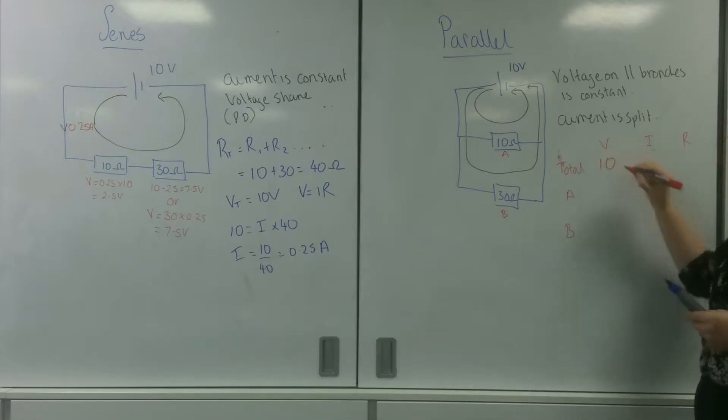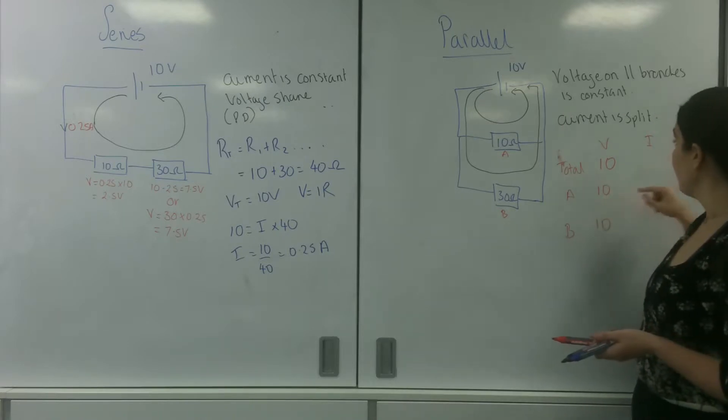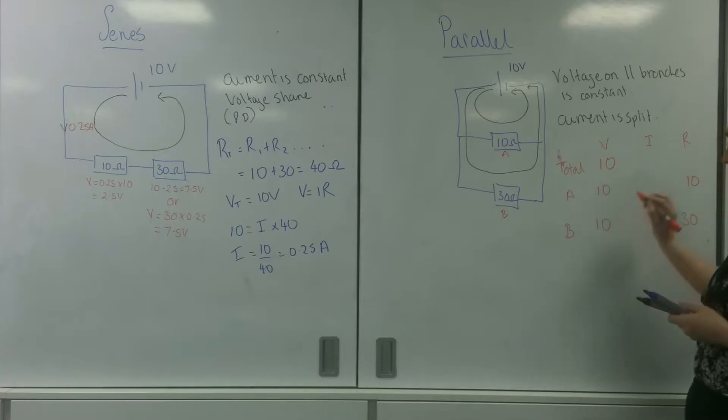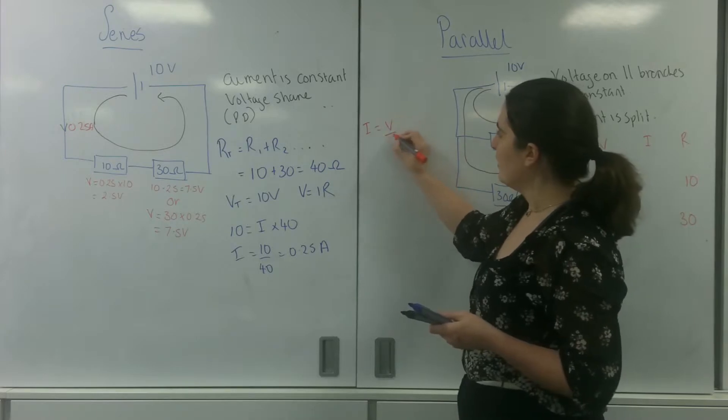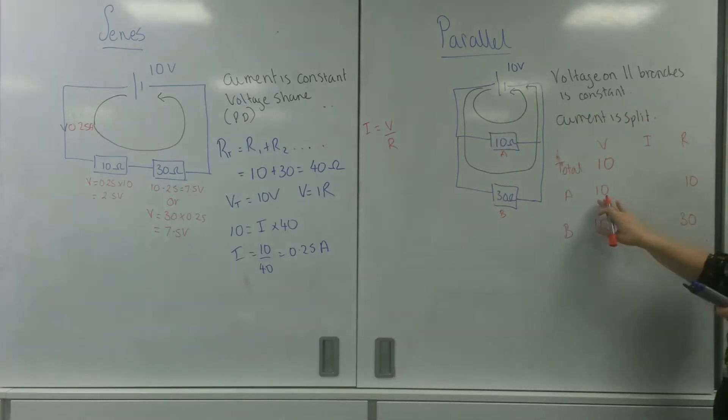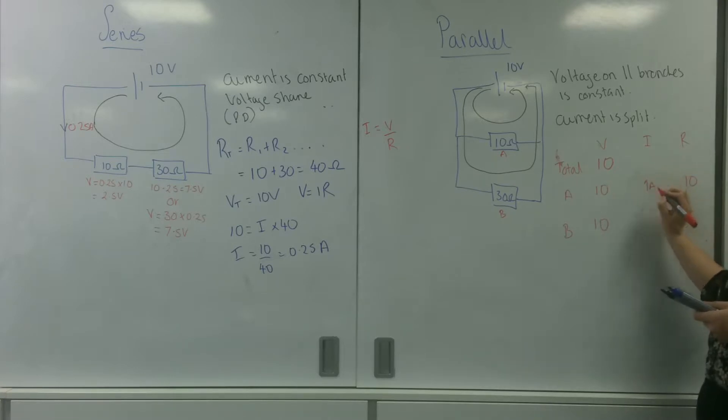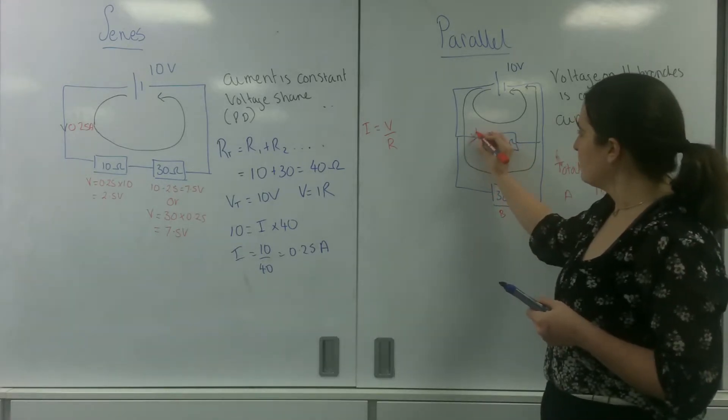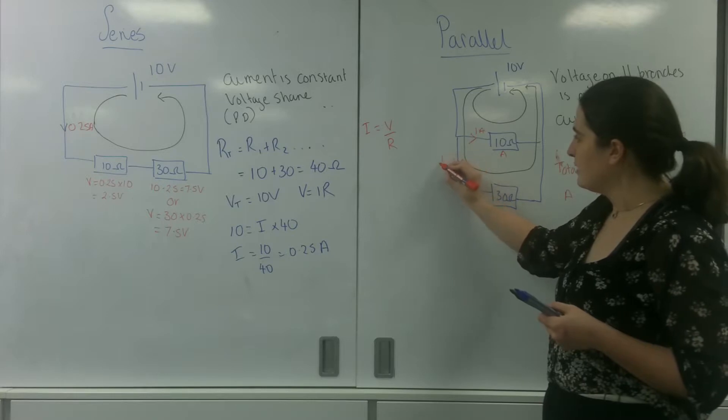So in total I have 10 volts and I know that A has 10 and B has 10. I know the resistance of A is 10 and I know the resistance of B is 30. And I'm going to work out using Ohm's law because I know the voltage, the potential difference across it, and I also know the resistance. So I can use I is V over R, so 10 divided by 10 is 1 and 10 divided by 30 is a third.